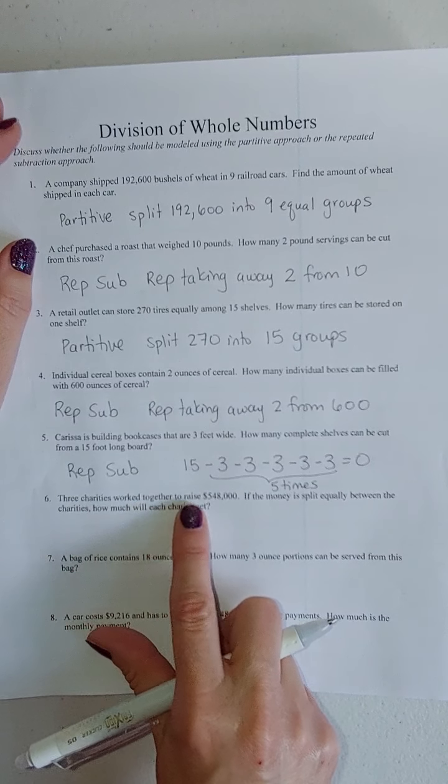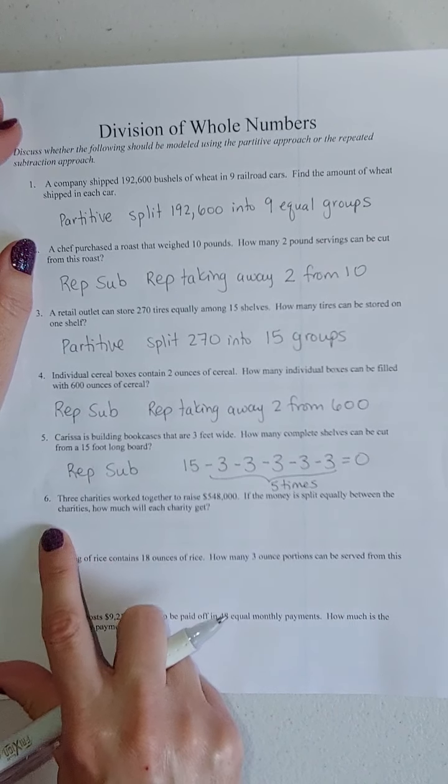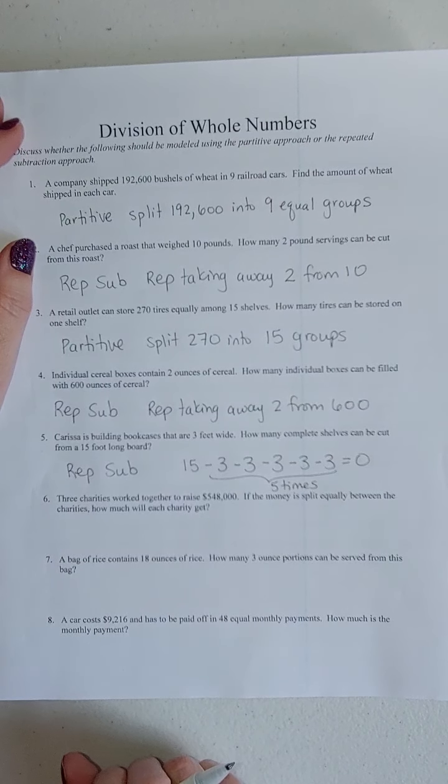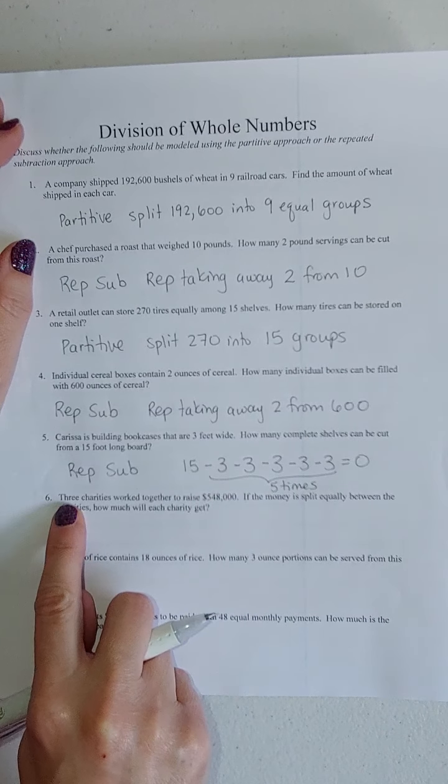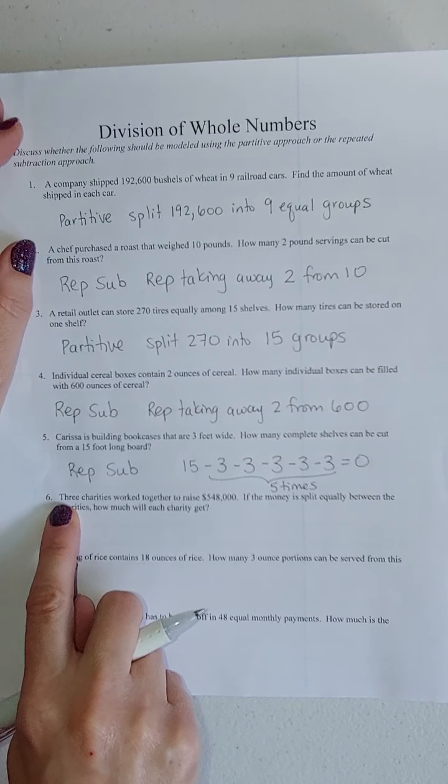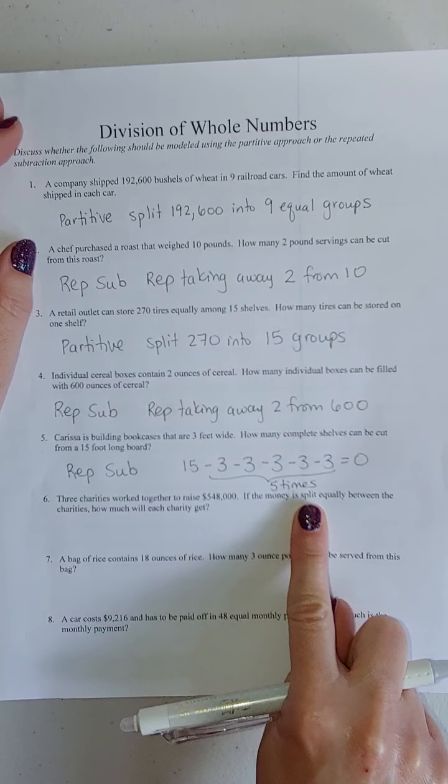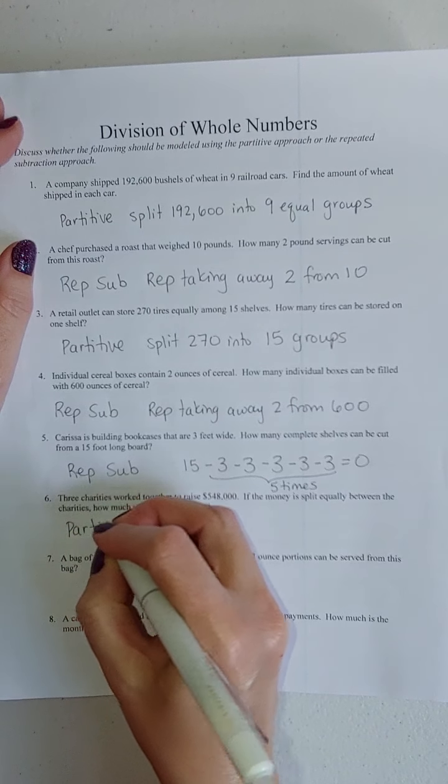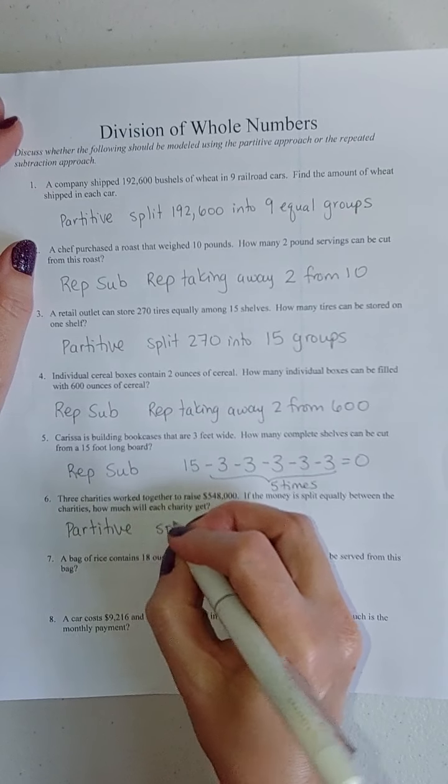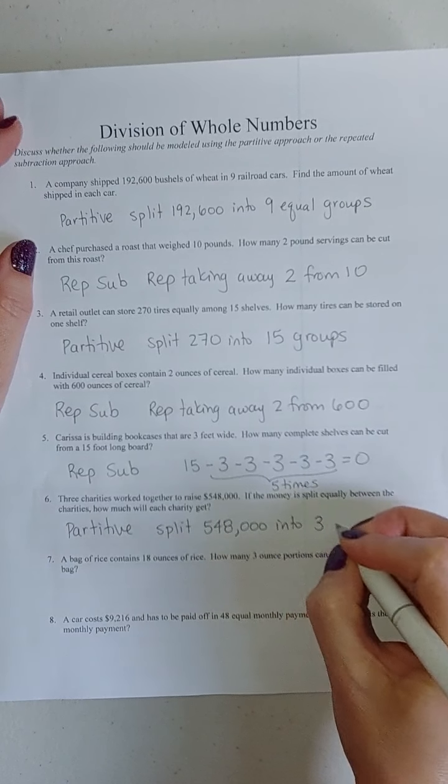Three charities work together to raise $548,000. If the money is split equally between the charities, how much will each charity get? Partitive or repeated subtraction. Am I splitting $548,000 into three equal groups or am I repeatedly taking away three until nothing's left? This one's got a key word in there. See, it says split. That's an indicator there that it's a partitive.